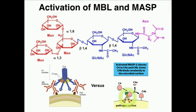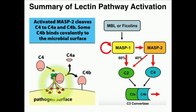From here, the story is exactly the same as the classical pathway. Some of the C4B becomes bound on the surface of the pathogen. Depending on whether it's MASP1 or MASP2, these enzymes can also activate C2 into C2B.